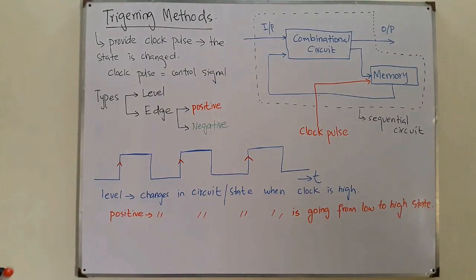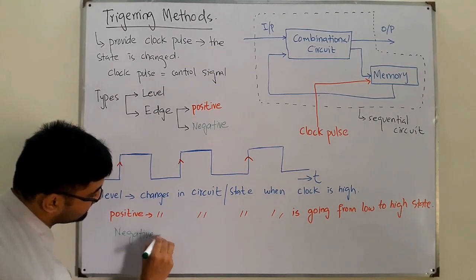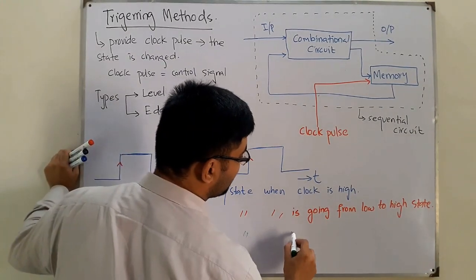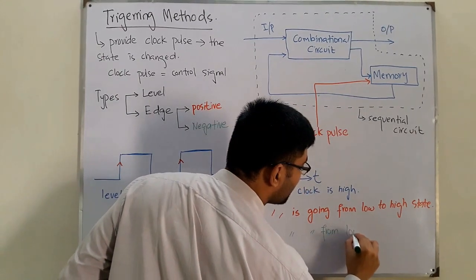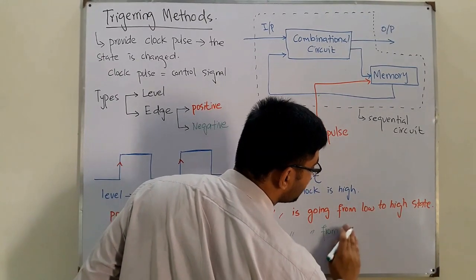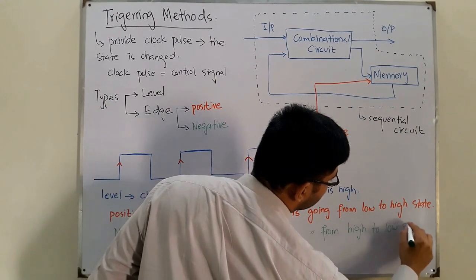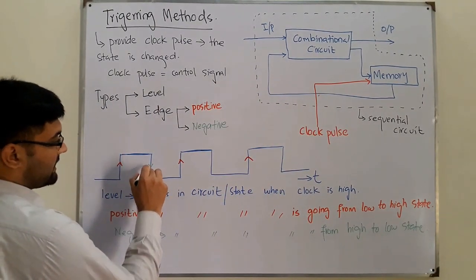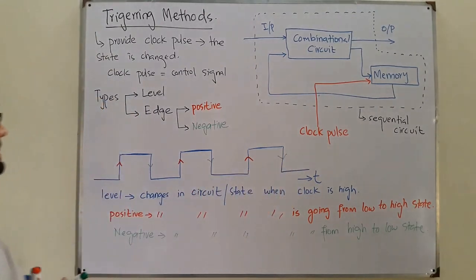For negative edge triggering, changes will occur when the clock is going from high to low state. This is the negative triggering, shown here in green. These are the three basic types of triggering.